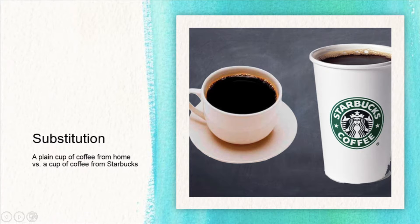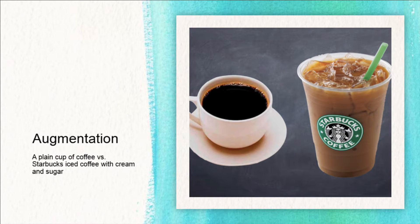The first step of SAMR is substitution. Looking at this through the coffee metaphor, let's say we are switching from our cup of coffee at home to a cup at Starbucks. It's virtually the same and it doesn't change the product — it's still a cup of coffee, we just changed where it's made. The next step is augmentation. This would be the equivalent of switching from a cup of coffee at home to an iced coffee at Starbucks. Although cream and sugar have been added to alter the taste, and we've added a straw, it's still the same product, just with some slight variations.